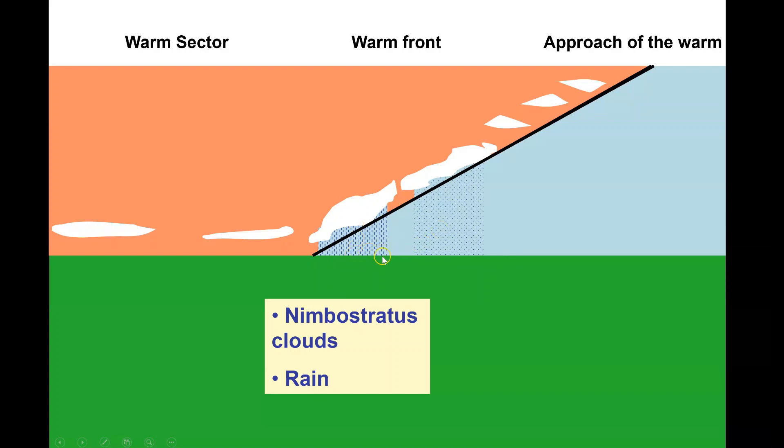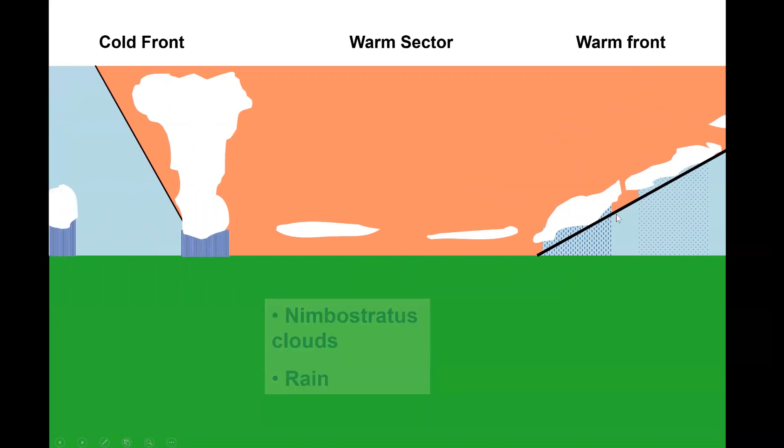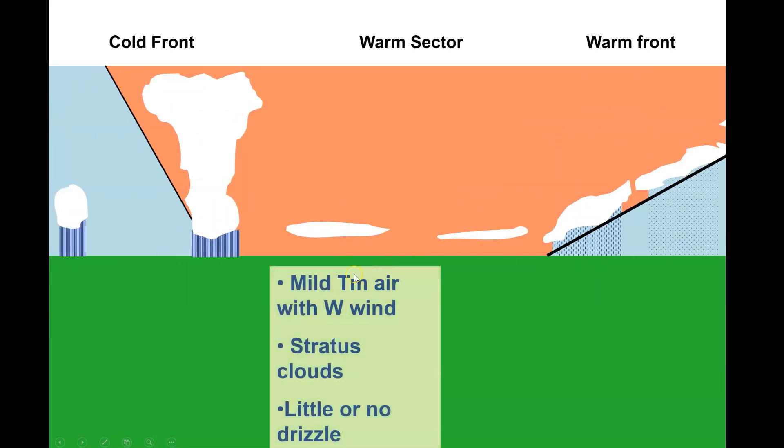Now as we stand here and the warm front passes over, we're about to go into the warm sector. What changes in the weather do you think that's going to bring? Well, the first thing you should notice is that the temperature will go up two or three degrees because now we've got mild TM air with the westerly wind.